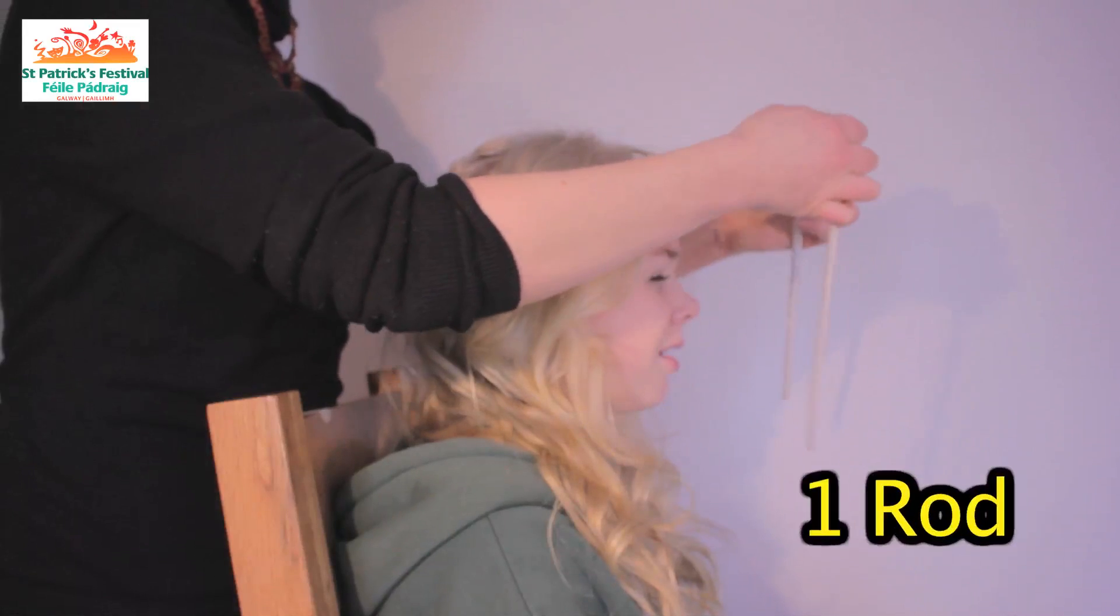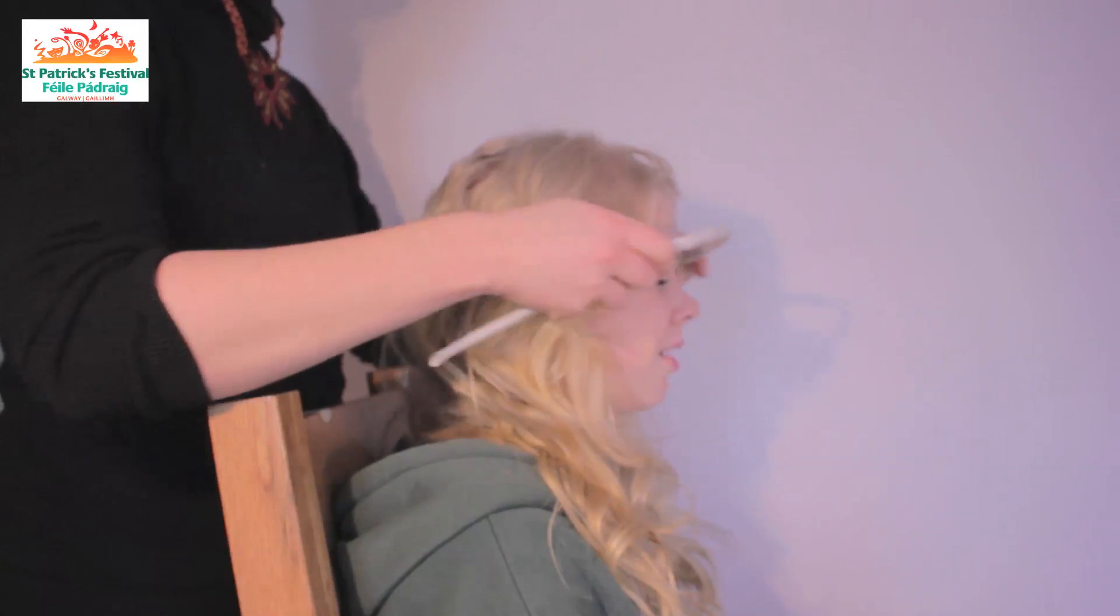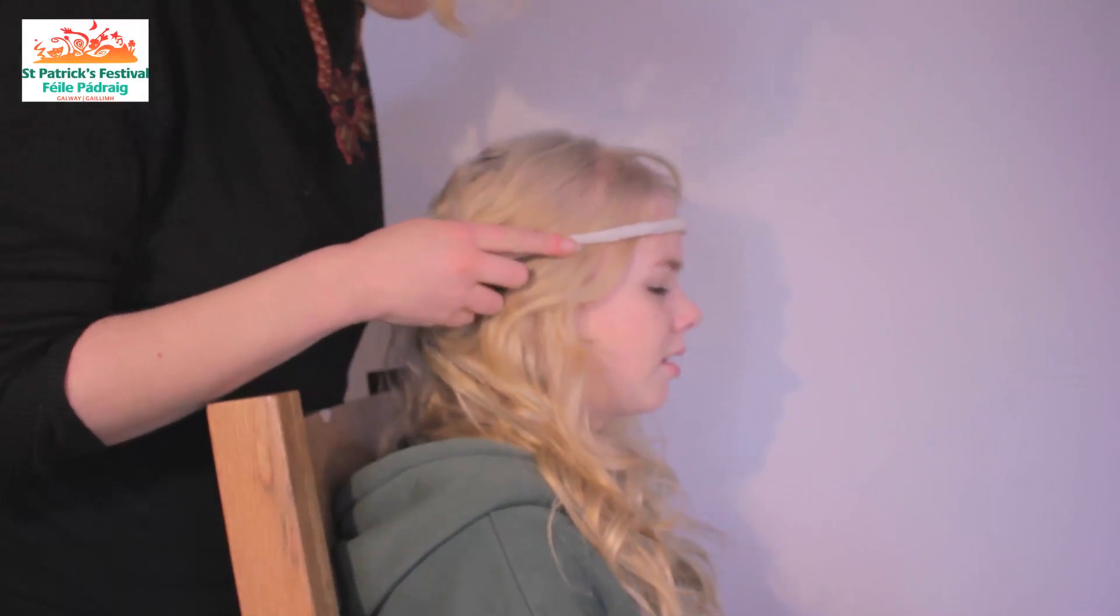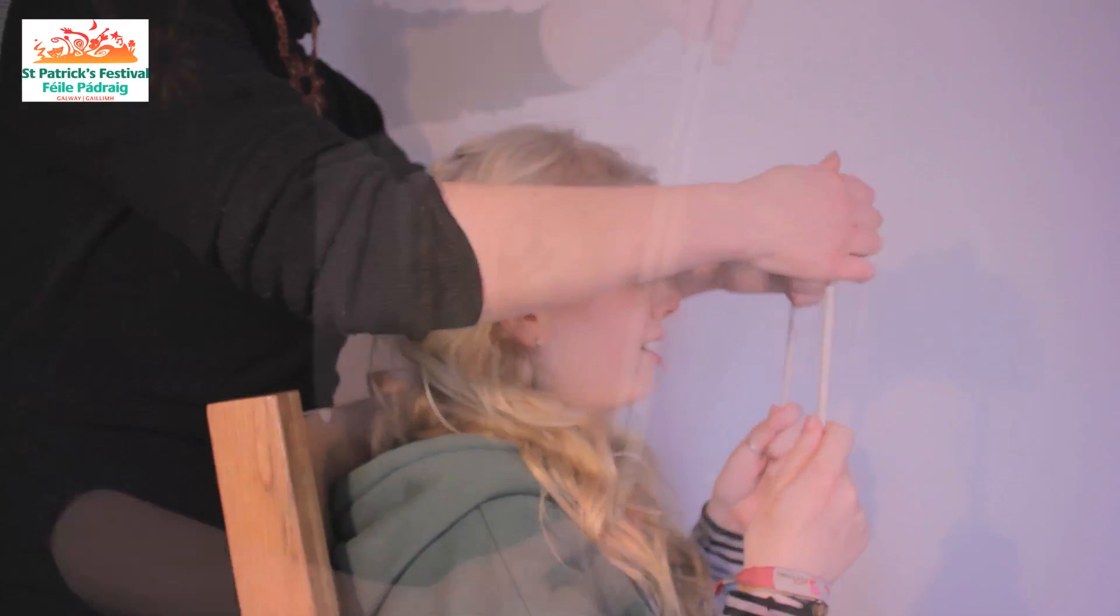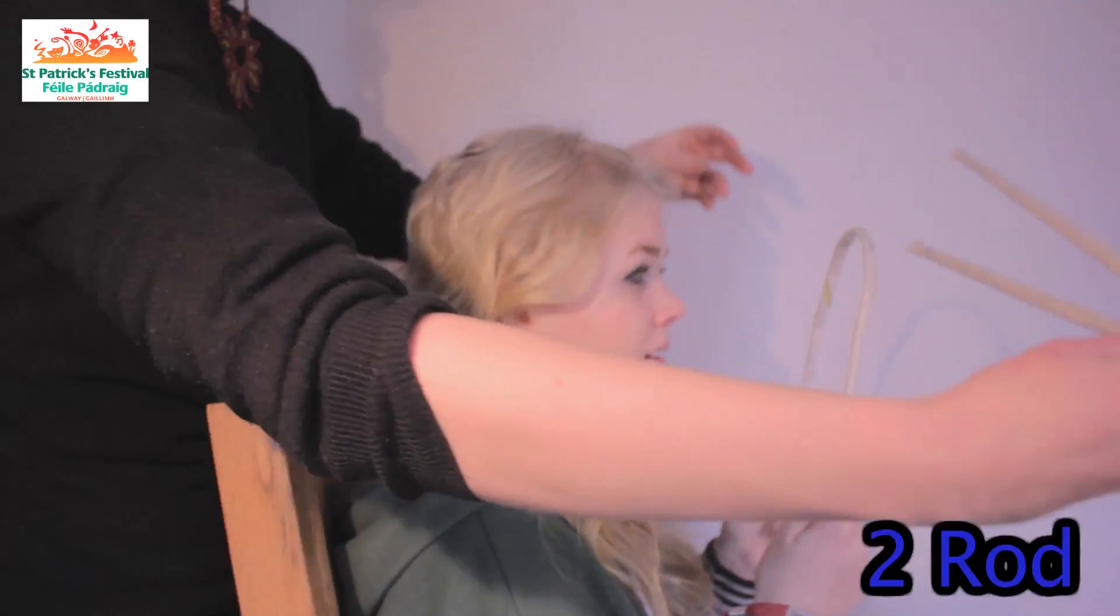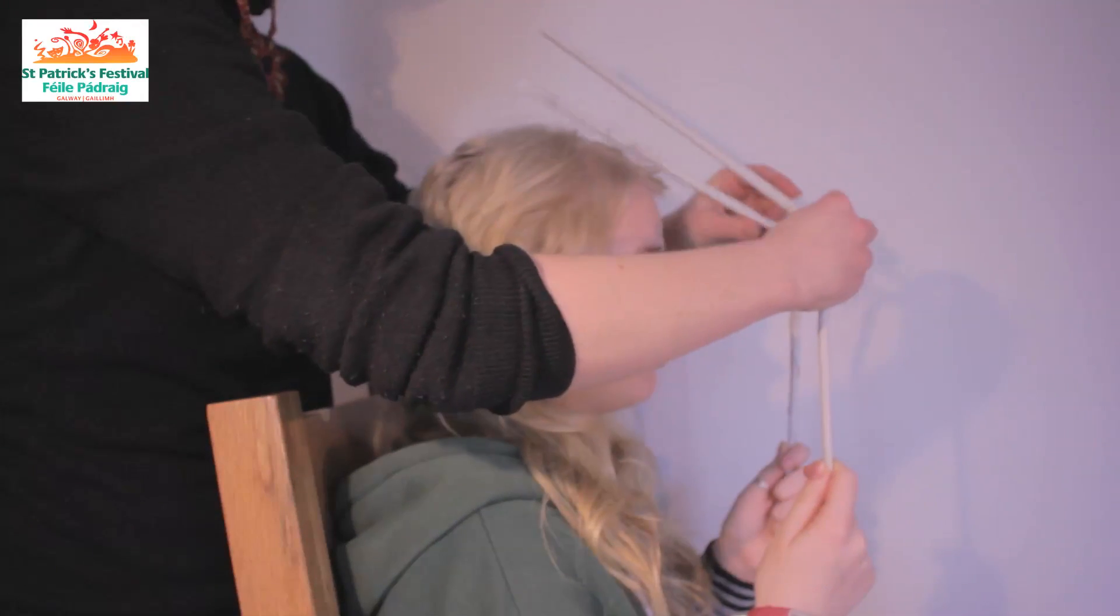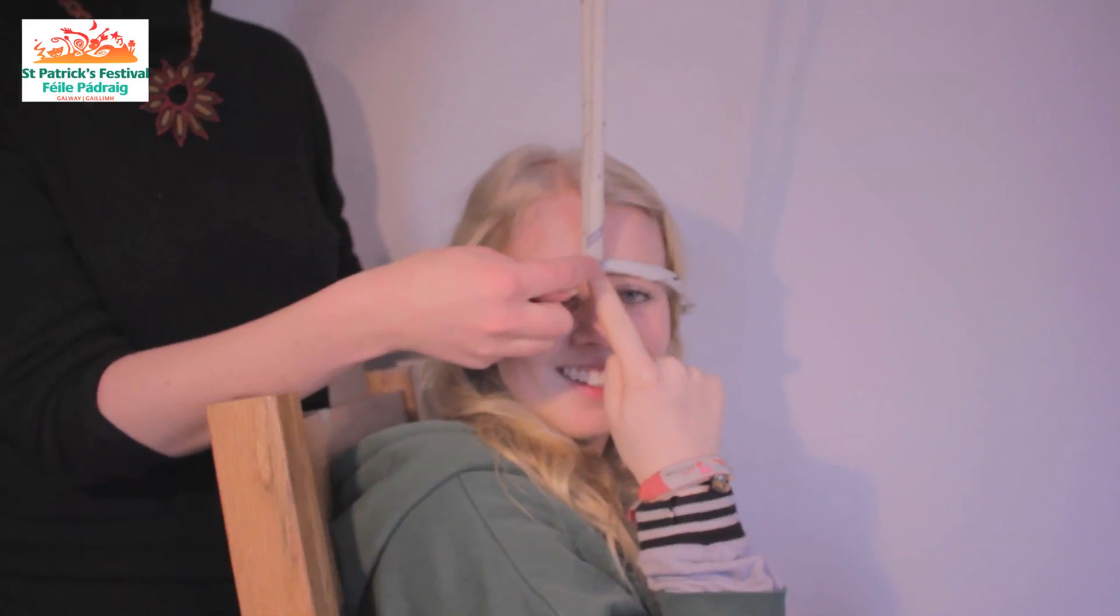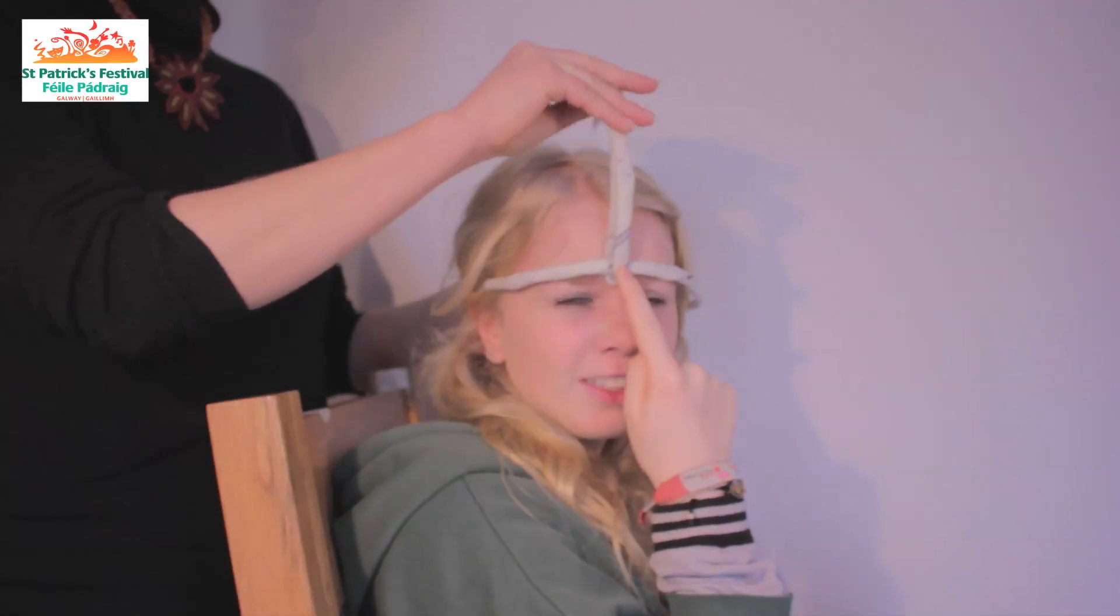First, bend it so that it goes around the crown of the head, and then get your partner to hold it. Good. Fold that in half, the middle, so it needs to be in the center of your head. And then you're going to bend it back.